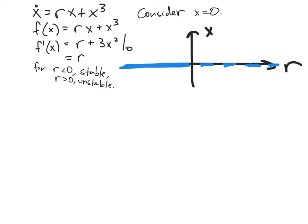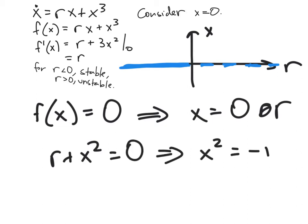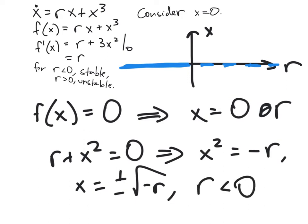Let's look at the other two fixed points. Setting f(x) = 0 gives x = 0, or r + x² = 0, which implies x² = −r, so x = ±√(−r). For this square root to make sense, we need r < 0. These two other fixed points exist when r is negative — this is different from before. From an argument about the alternation of stability in fixed points, they're going to branch unstably.